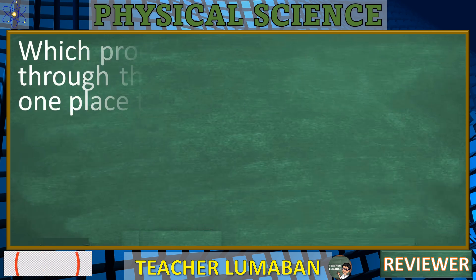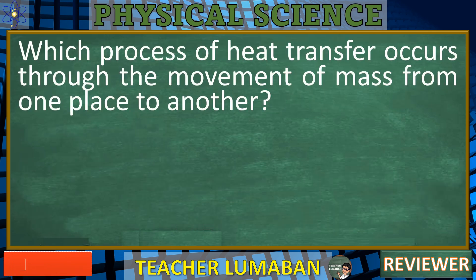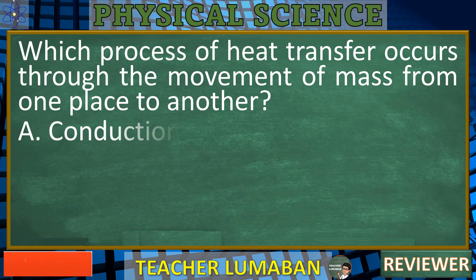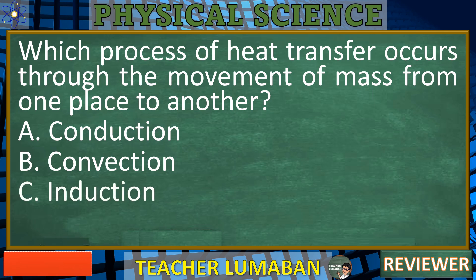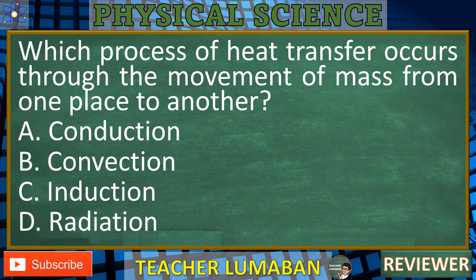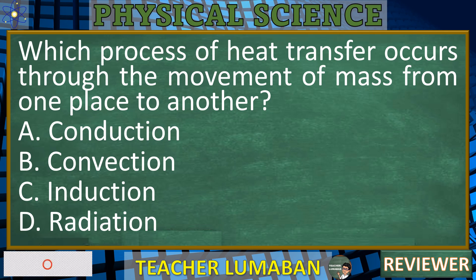Which process of heat transfer occurs through the movement of mass from one place to another? A. Conduction. B. Convection. C. Induction. D. Radiation. In the next 5 seconds, select the best response from the available options.